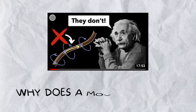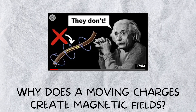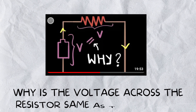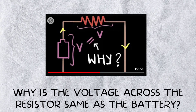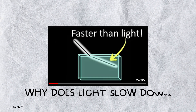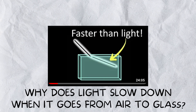Think about these questions: why does a moving charge create a magnetic field? Why is the voltage across the resistor the same as that of the battery? Why does light slow down when it goes from air to glass? What's common in these questions?